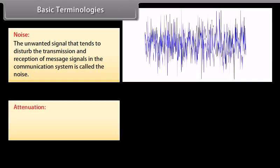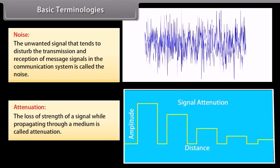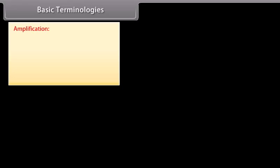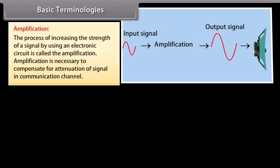Attenuation: the loss of strength of a signal while propagating through a medium is called attenuation. Amplification: the process of increasing the strength of a signal by using an electronic circuit is called amplification.